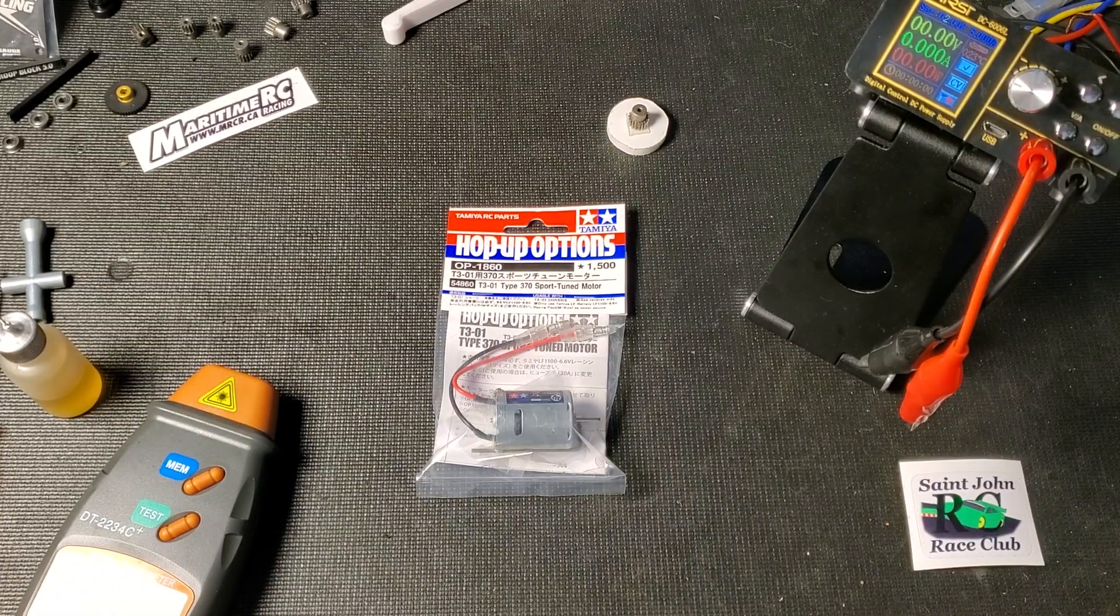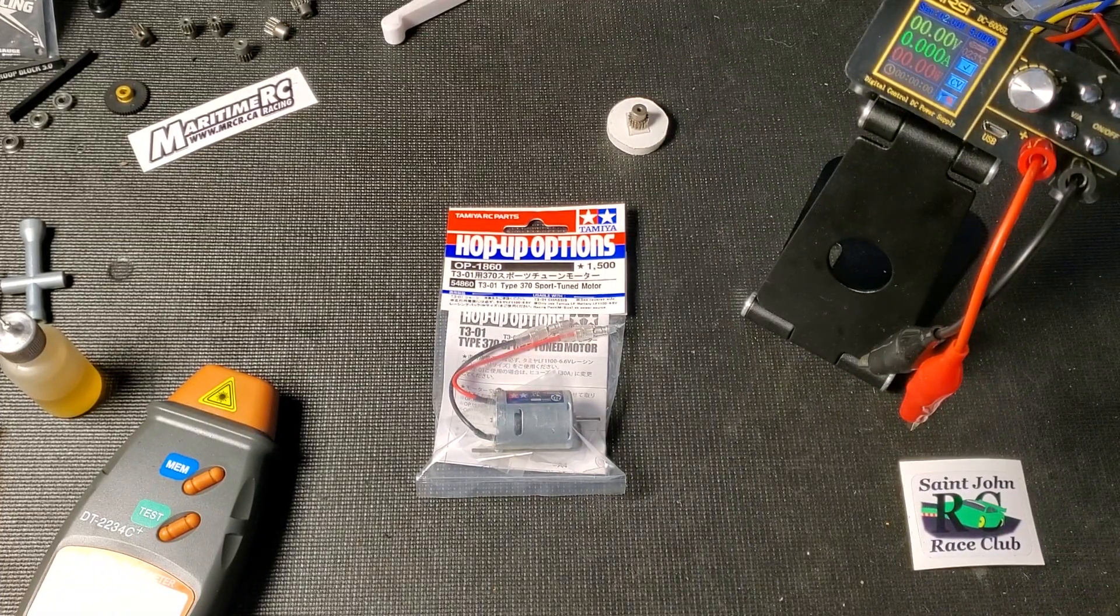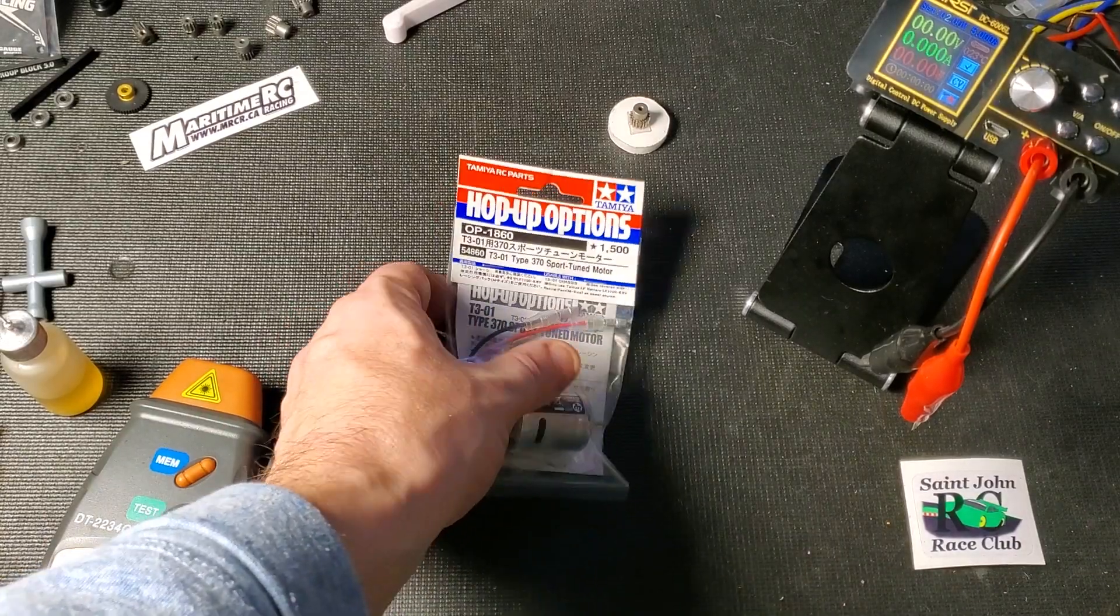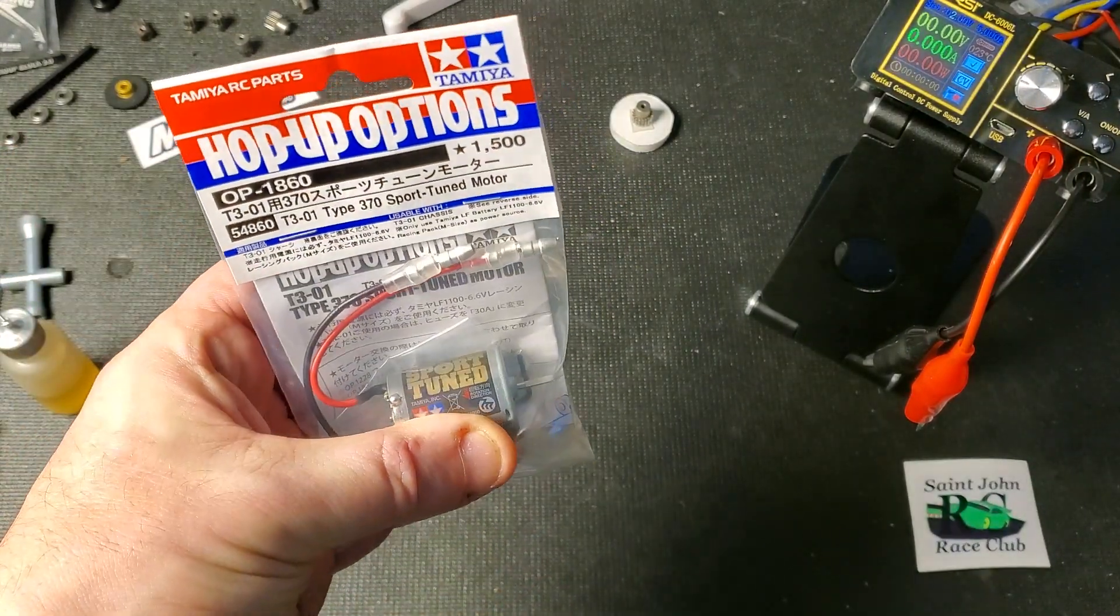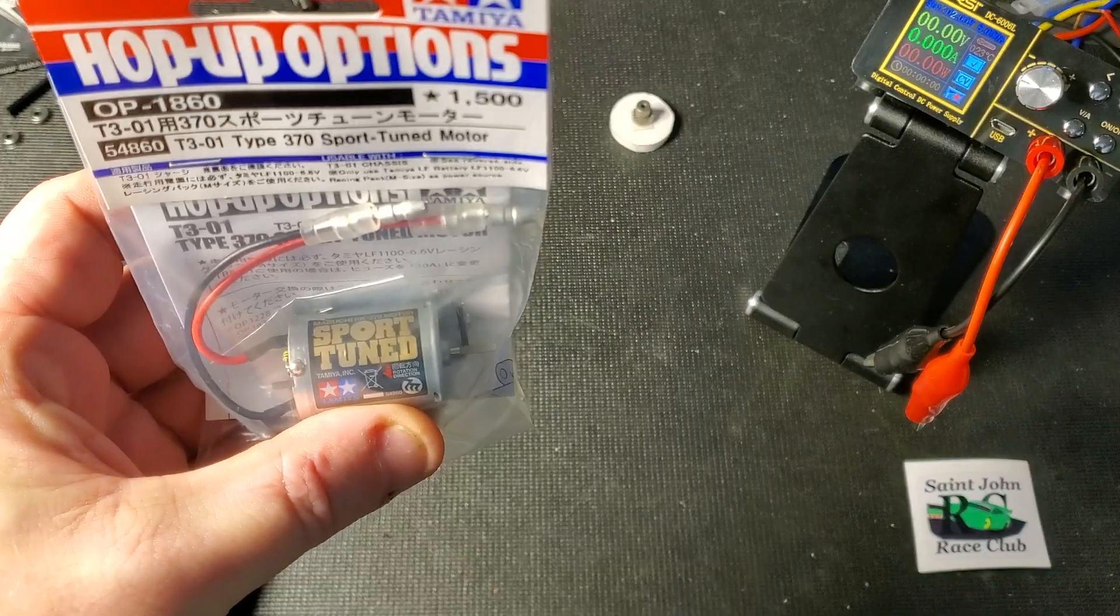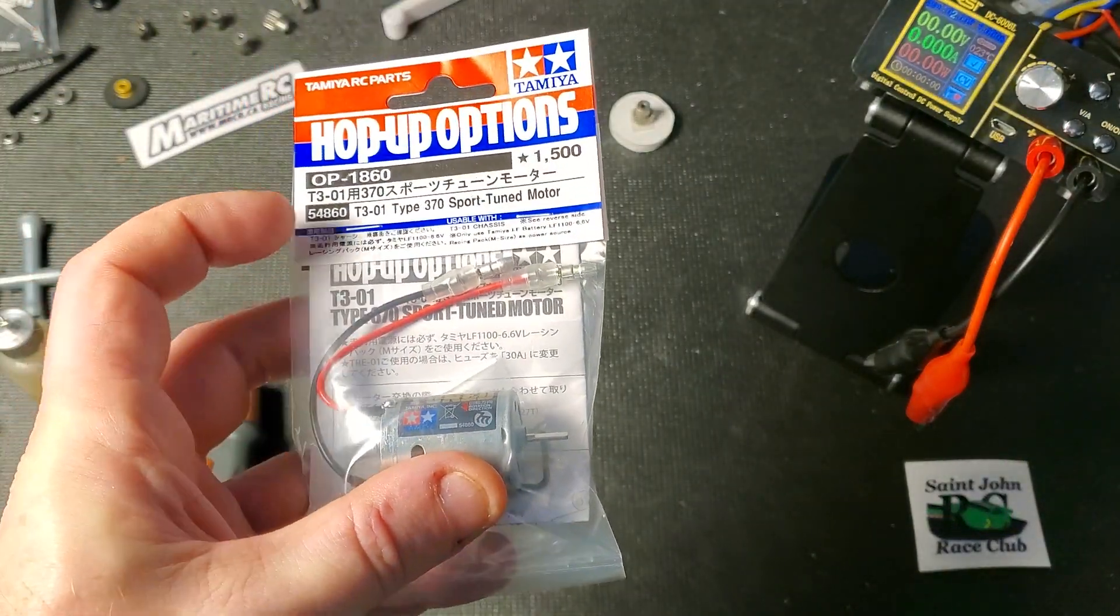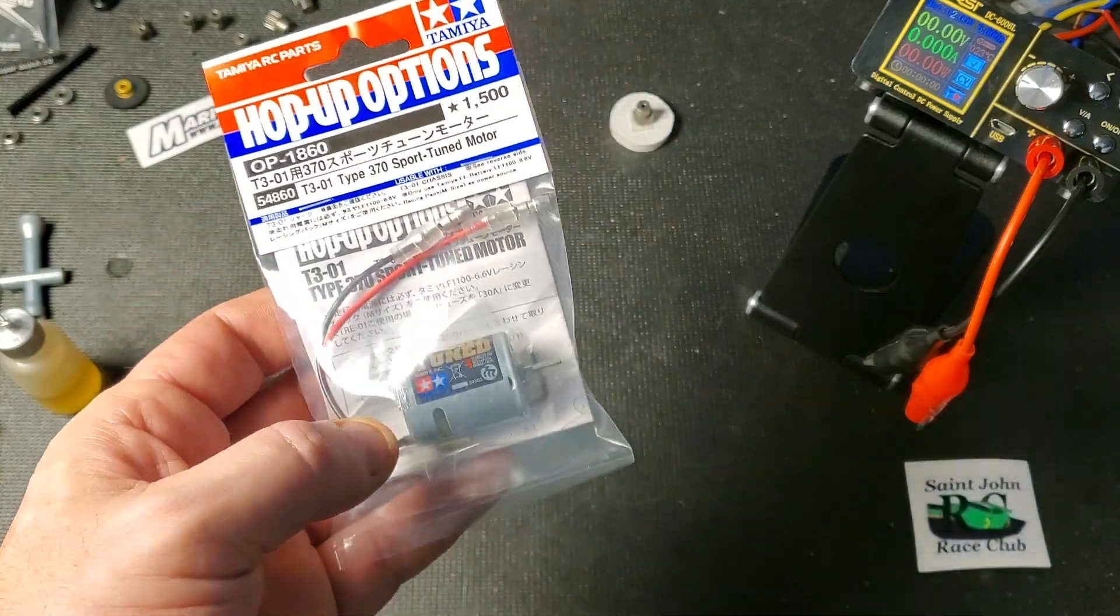Hello racers and welcome to today's video. In today's video we are going to be doing a quick review of the little Tamiya 370 motor sport tuned, code OP 1860.